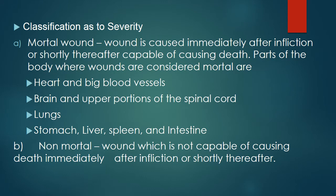Classification as to severity: a mortal wound is one that is capable of causing death immediately after infliction or shortly thereafter. Parts of the body where wounds are considered mortal are the heart and big blood vessels, brain and upper portions of the spinal cord, the lungs, and the stomach, liver, spleen, and intestine. A non-mortal wound is one that is not capable of causing death immediately after infliction or shortly thereafter.